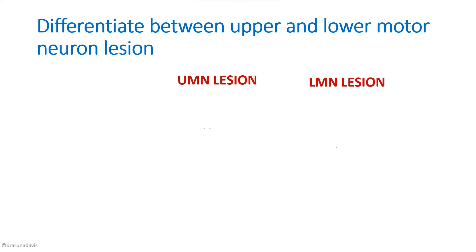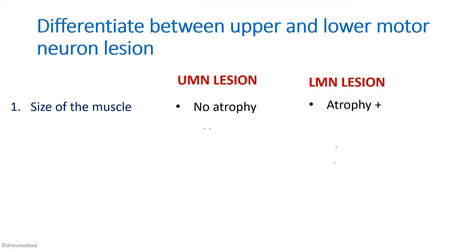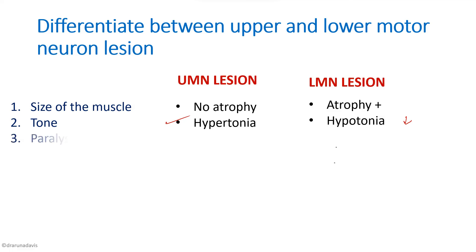Now we can differentiate between upper and lower motor neuron lesions. Regarding muscle size: in UMN lesion there will be no atrophy, whereas in LMN lesion there are chances of atrophy. Regarding tone: there is hypertonia in UMN lesion — we now know the reason — and hypotonia in LMN lesion. Regarding paralysis: the type of paralysis in UMN lesion is spastic paralysis, whereas in LMN lesion it is flaccid paralysis.